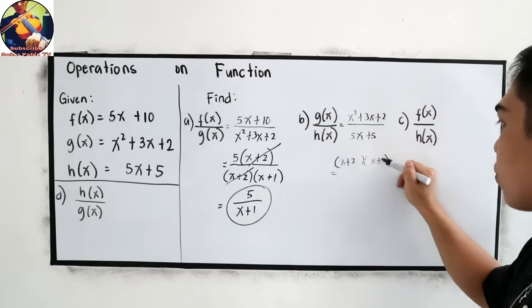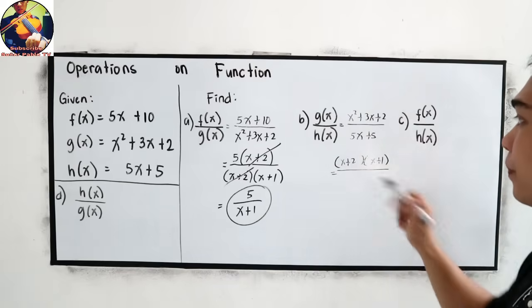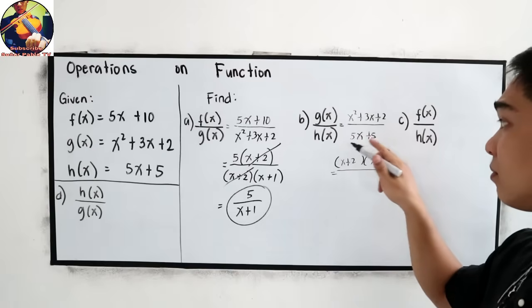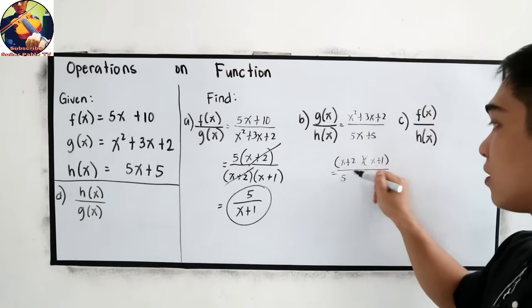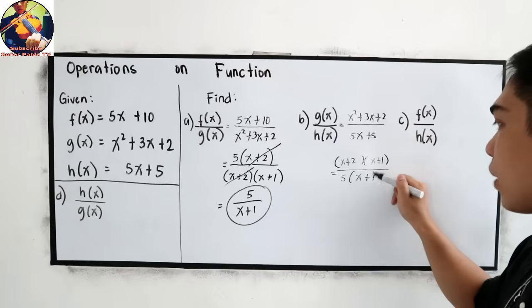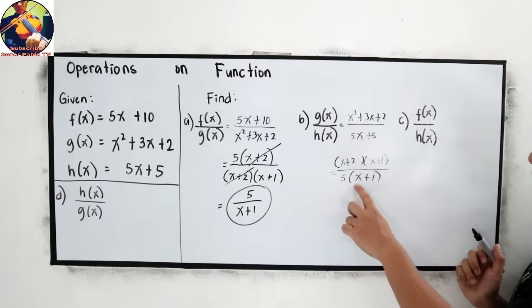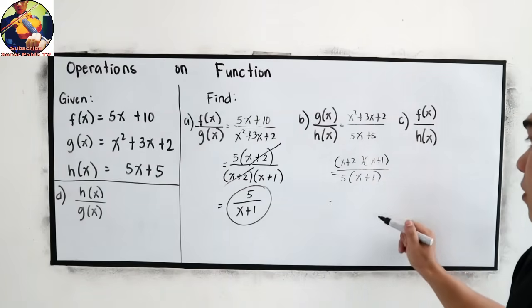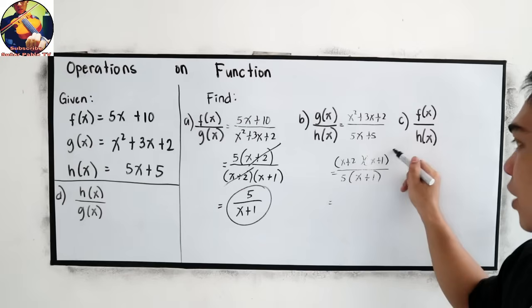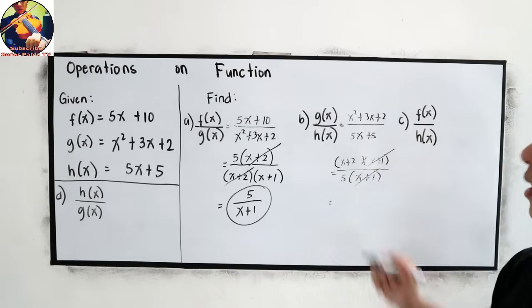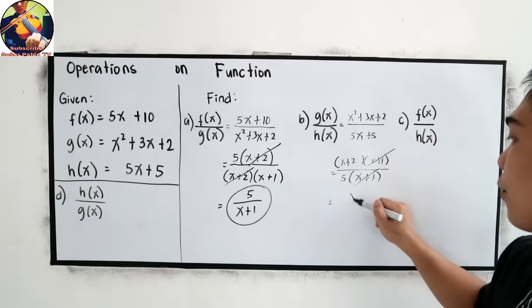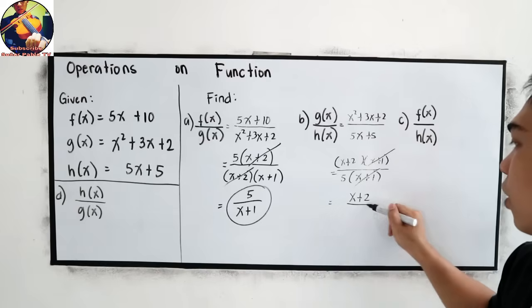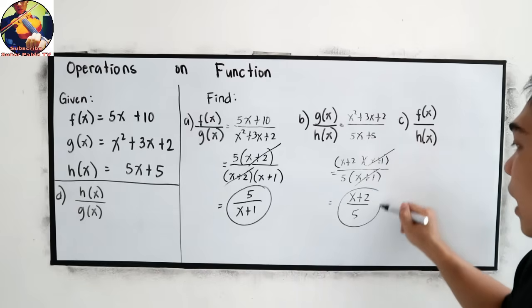Over, common factor is 5. Then we have x plus 1. 5 times x is 5x. 5 times 1 is 5. Now, cancel x plus 1 in the numerator and x plus 1 in the denominator. We have x plus 2 over 5. This will be our final answer.